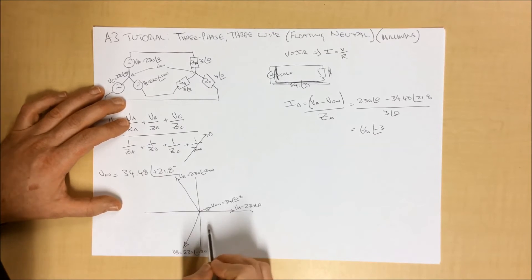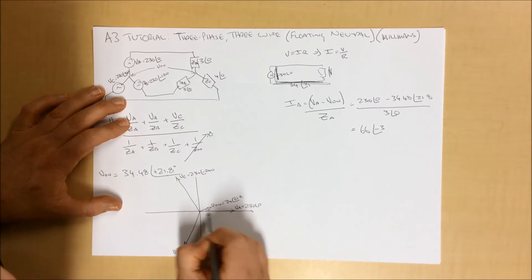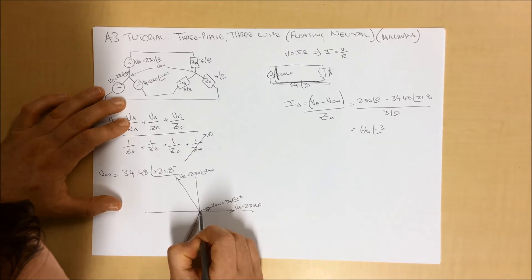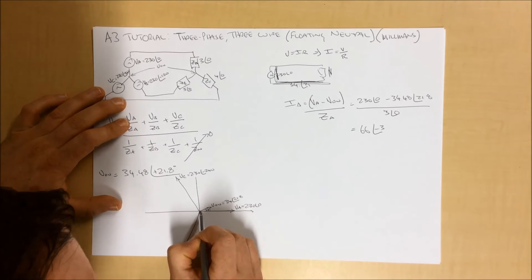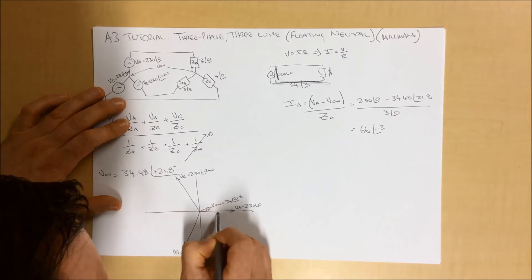So if we come back to our vector diagram here, we could draw this in. And we would get a solution that would come and look a little bit like that.